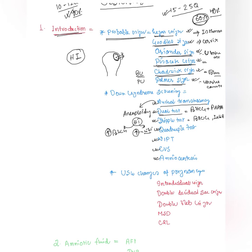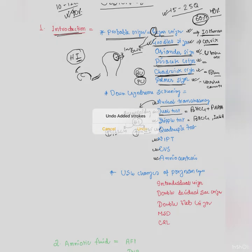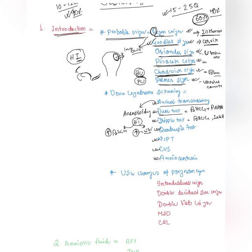A simple mnemonic: Hegar sign — H for Hegar and I for isthmus, that is the softening of the isthmus. In image-based exam questions, you can see the doctor holding the uterus with two hands, which helps diagnose the Hegar sign. Goodell sign, also at six weeks, refers to softening of the cervix. BC: C for Chadwick, B for bluish discoloration of the vagina and vulva.